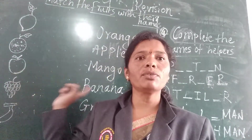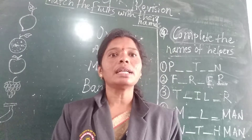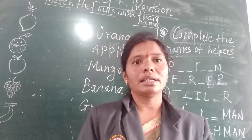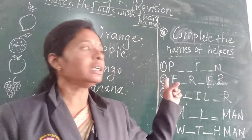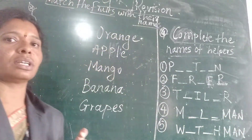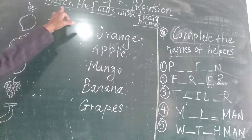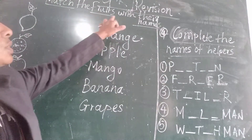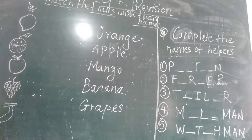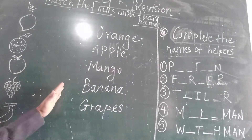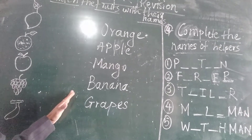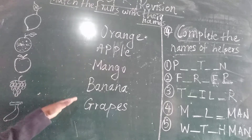These are GK's number 3 and number 4 questions. This is your revision before the exam — the questions that will come in the exam, we will learn those. Number 3 and number 4. Now the number 3 question: Match the fruits with their names. Here on this side fruits are given, and here on this side their names are given. You have already learned the spellings in the chapter.